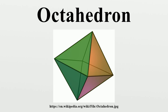Uniform colorings and symmetry: there are three uniform colorings of the octahedron, named by the triangular face colors going around each vertex. The octahedron symmetry group is O, of order 48, the three-dimensional hyperoctahedral group. This group's subgroups include D3d, the symmetry group of a triangular antiprism; D4h, the symmetry group of a square bipyramid; and Td, the symmetry group of a rectified tetrahedron.